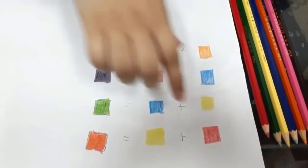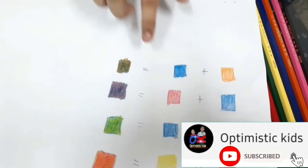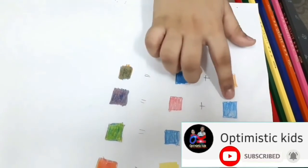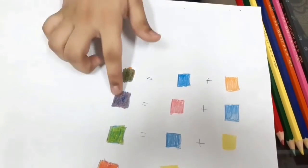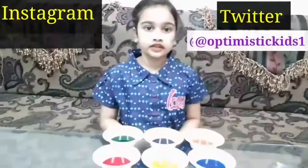So friends. Red and yellow mix together to make orange. Yellow and blue mix together to make green. Blue and red mix together to make purple. Orange and blue mix together to make brown. So friends,